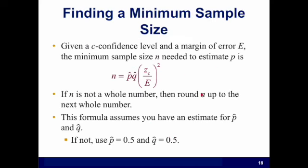If N is not a whole number, then round N up to the next whole number. This is pretty similar to the comment when we were in section 6.1. This formula assumes that you have an estimate of P hat and Q hat, because to estimate the sample size you need P hat and Q hat.